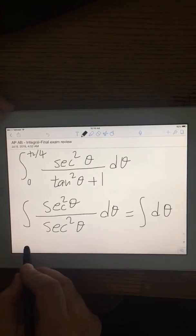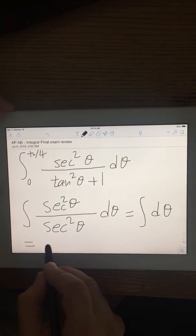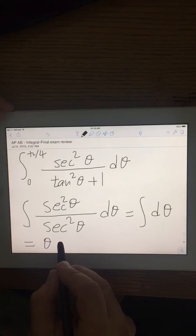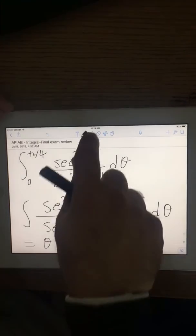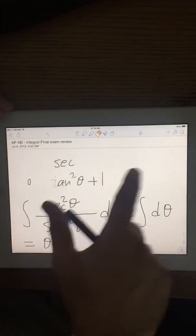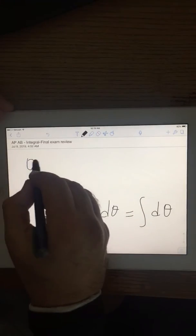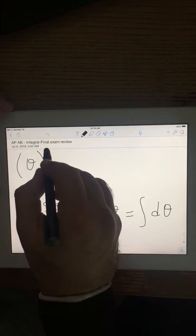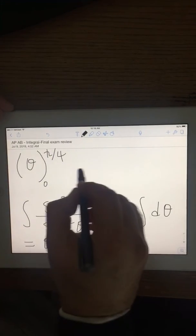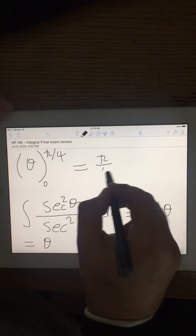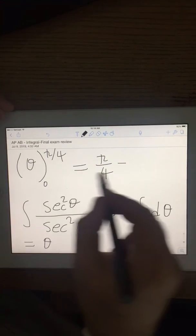And the answer would be theta from 0 to pi over 4. Now I put the upper limit minus lower limit.